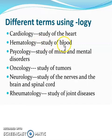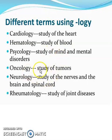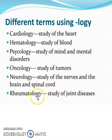Hematology is the study of blood — you usually see this in hospitals or laboratories where blood is extracted and the blood chemistry is studied. Psychology is the study of the mind and mental disorders. Oncology is the study of tumors. Neurology is the study of nerves, the brain, and the spinal cord. Rheumatology is the study of joint diseases.